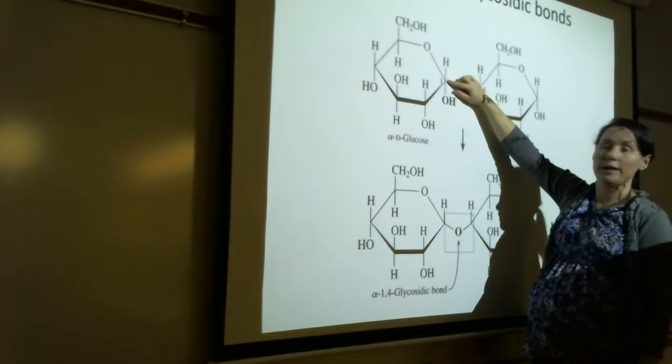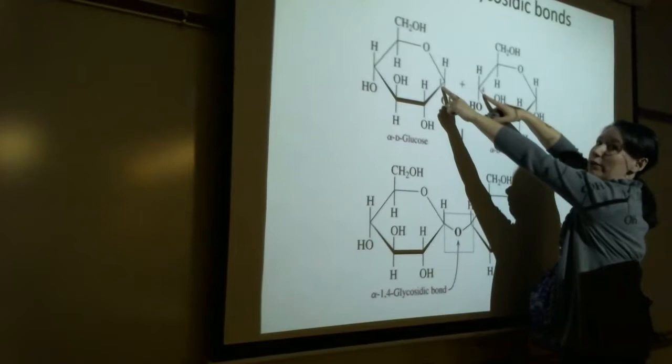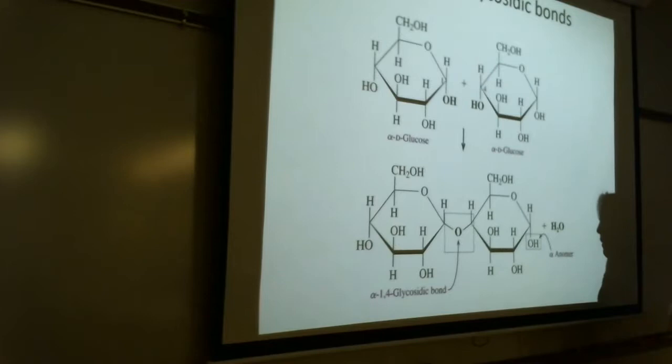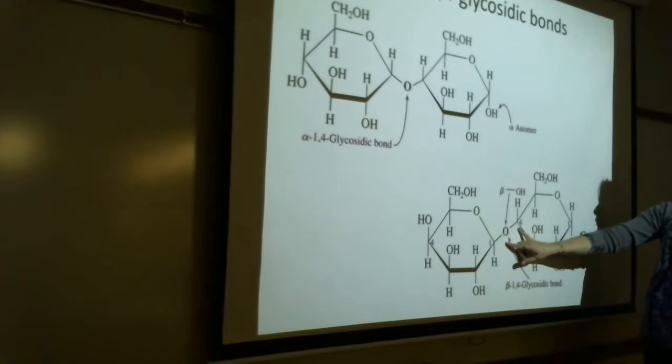1, 2, 3, 4, 5, 6, and 1, 2, 3, 4, 5, 6. So carbon 1 and carbon 4 is where the glycosidic bond is occurring. So it's called a 1, 4 glycosidic bond. And there are 2 types of glycosidic bonds. There's alpha and there's beta. Can you see the difference between alpha, 1, 4, and beta, 1, 4?